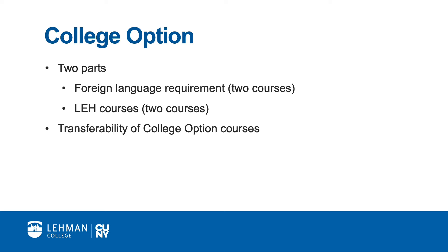While this is the basic college option structure, students who are part of the adult degree program have additional choices for completing the college option. If you are part of the ADP program, please speak with your advisor regarding the requirements that pertain to you. Under Pathways, college option courses taken at another CUNY college may be used to fulfill Lehman's college option requirements, regardless of what type of course was taken. For example, a student transferring from Hunter College may have taken a biology course to fulfill Hunter's college option requirement. Upon transferring to Lehman, this biology course will count toward Lehman's college option requirement, even though at Lehman, biology courses are not part of the college option.